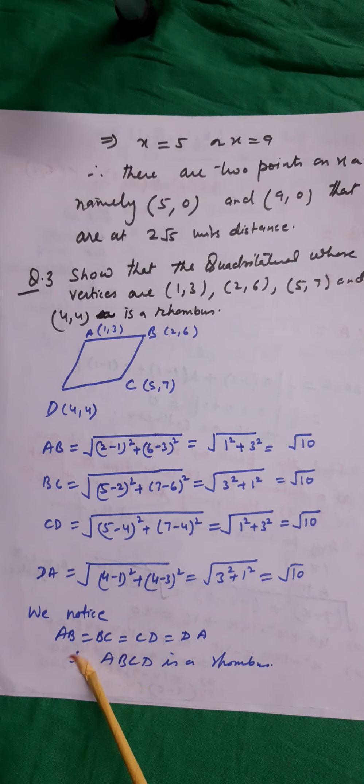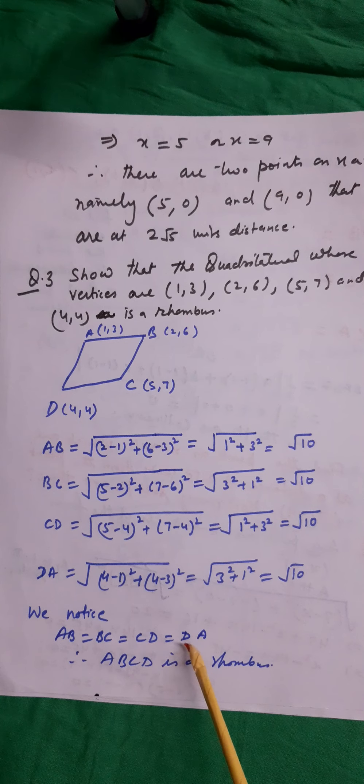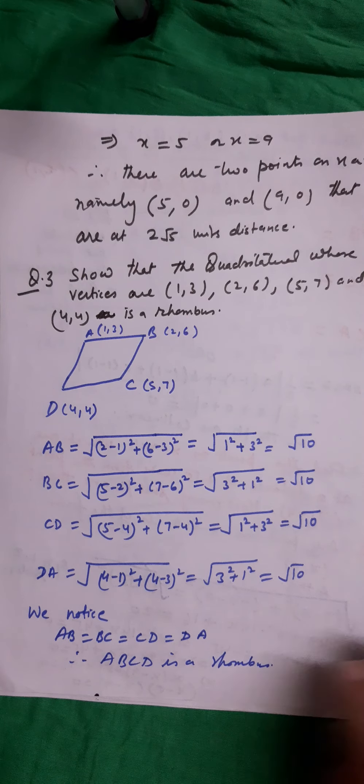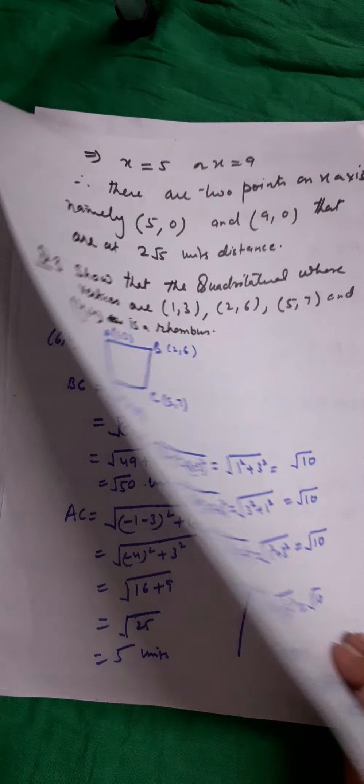We notice that AB = BC = CD = DA = √10, therefore ABCD is a rhombus.